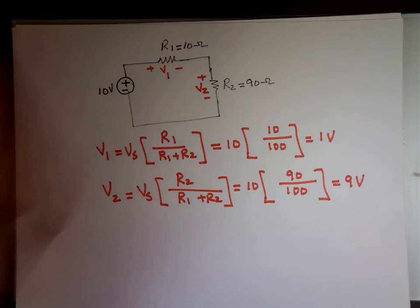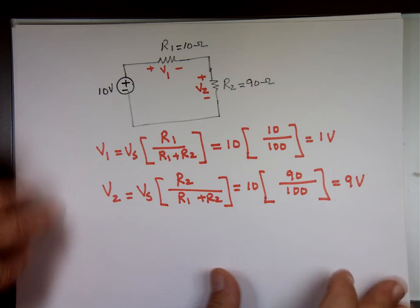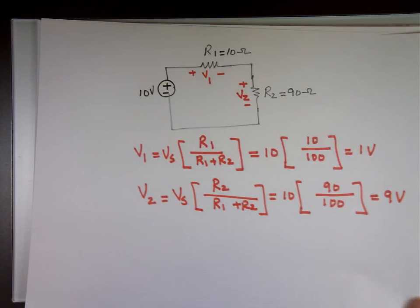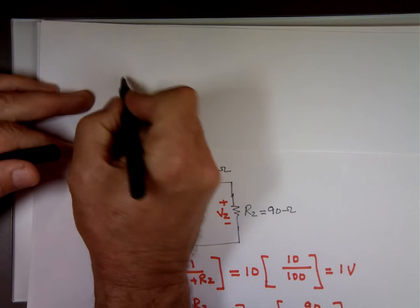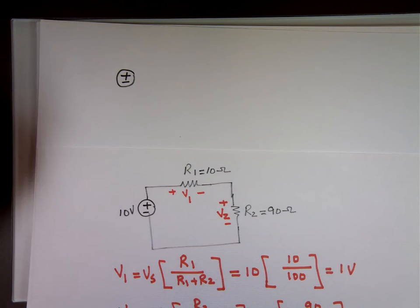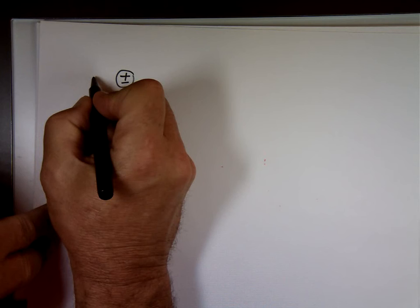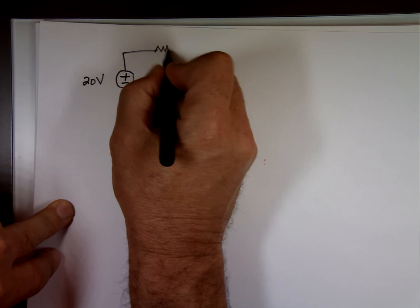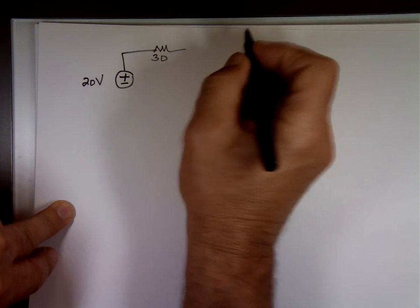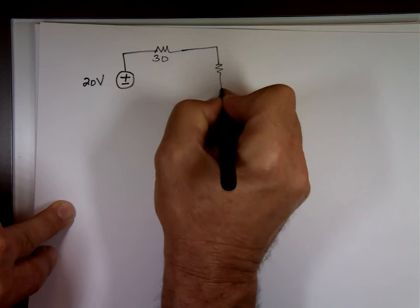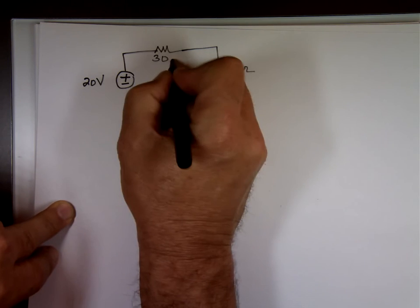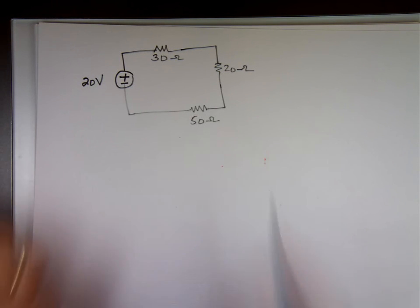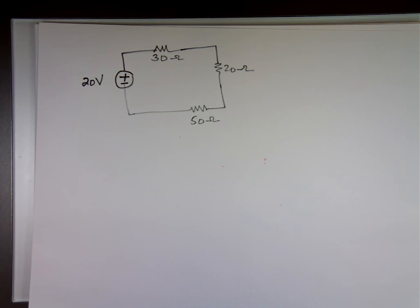What happens if you have three resistors, not just two? Would it be Vs times R over R1 plus R2 plus R3? Possibly. So if you have, let me make a circuit here. Let's say we have here 20 volts, 30 ohms, 20 ohms, and 50 ohms.